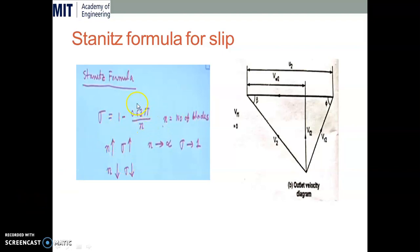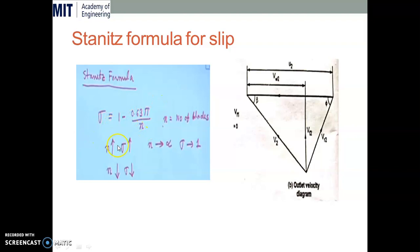There is an empirical formula for slip called the Staniss formula: sigma equals 1 minus (0.63π / n), where n is the number of blades. As the number of blades increases, the ratio 0.63π/n decreases, so sigma approaches 1 — meaning the slip factor increases toward 1. Conversely, if the number of blades decreases, the ratio increases and the slip factor becomes less than 1 and decreases. Ideally, we want to minimize the slip factor to reduce work input and losses. This is the Staniss formula for understanding slip in a centrifugal compressor.